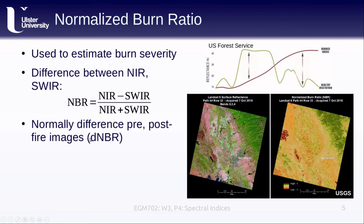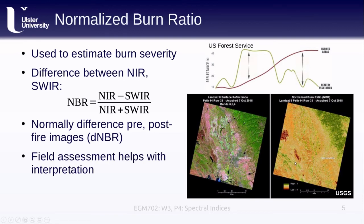We would normally also want to take the difference in the NBR from before the fire and after the fire — that is, the delta NBR. As you can see in this Landsat image, there are brown fire scars visible in the hills near Sacramento, California. The normalized burn ratio shows large dark red areas representing those fire scars. In general, values close to -1 represent fairly severe forest fires, though field assessment is usually needed to fully interpret the results.